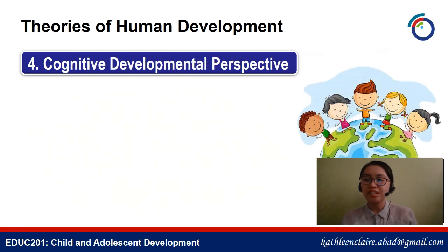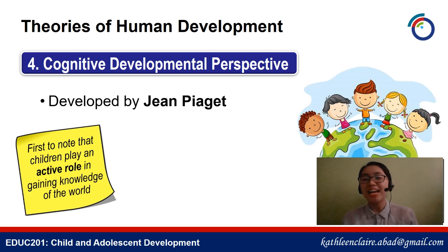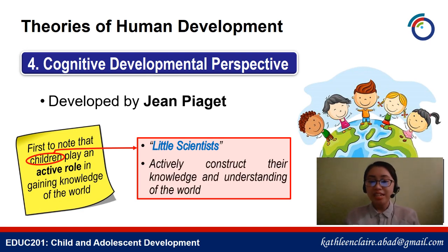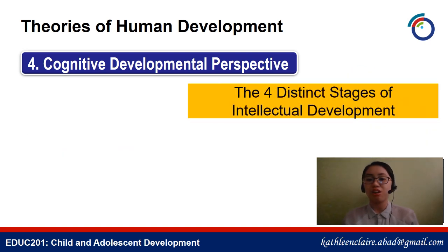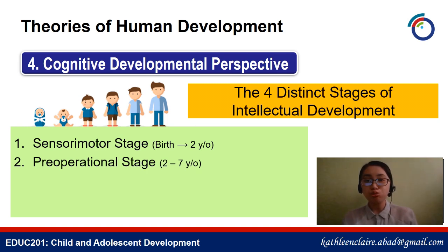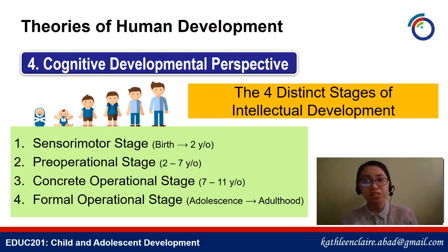Fourth, we have the cognitive developmental perspective, developed by John Piaget. It is important to note that Piaget was the first to say that children play an active role in gaining knowledge of the world — he coined children as 'little scientists' because they actively construct their knowledge and understanding of their world. He also proposed four distinct stages of intellectual development: the sensorimotor stage (birth to 2 years), the pre-operational stage (2 to 7 years), the concrete operational stage (7 to 11 years), and the formal operational stage (adolescence to adulthood).